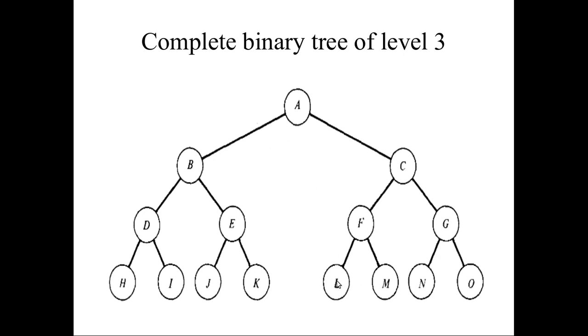This tree's level is 3. At level 2, all nodes have their children completely. This is called a complete binary tree.